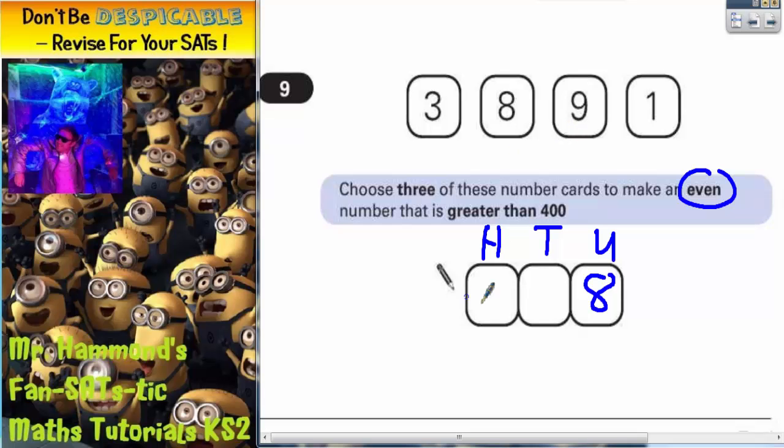It would have to be a 9. So the hundreds column would have to be a 9. So far we've got an even number because the units is 8, and it's greater than 400 because it's 900 and something.